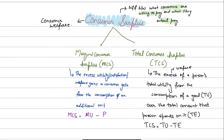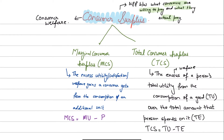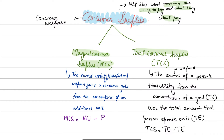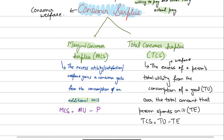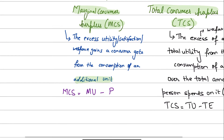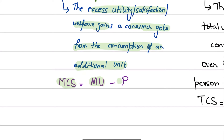Moving forward, you need to understand that there are two types of consumer surplus: marginal consumer surplus and total consumer surplus. It's not exactly two types — it's just that we can measure consumer surplus individually or in total. Marginal consumer surplus is the consumer surplus of an additional or single unit, while total consumer surplus is the total consumer surplus made on all the goods purchased.